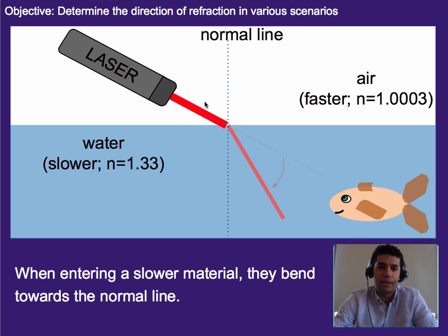So one example here we have a laser coming in and again it bends towards the normal line because it's moving faster in air and slower in water. So if we imagine wagon wheels the wheel right here would hit first it would slow it down and it would then pivot this way.